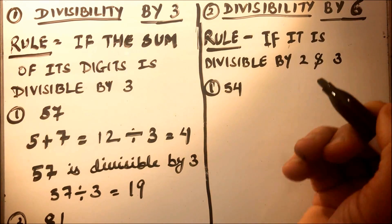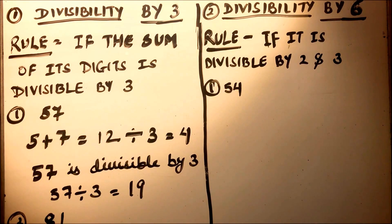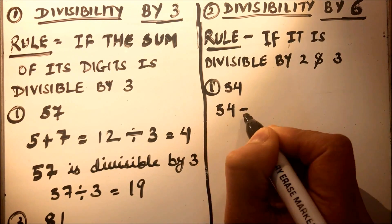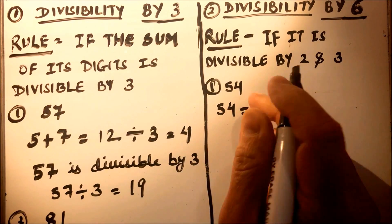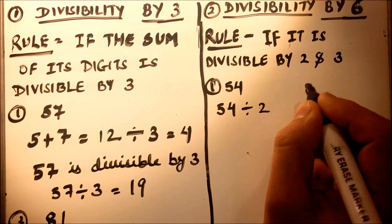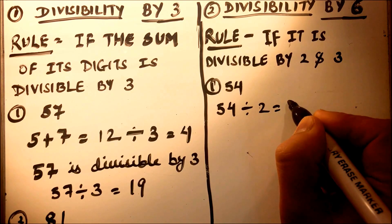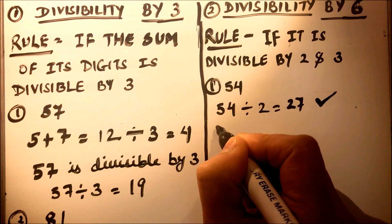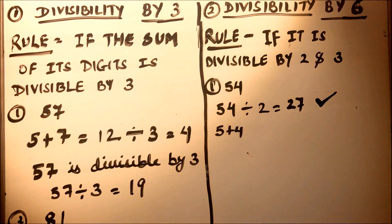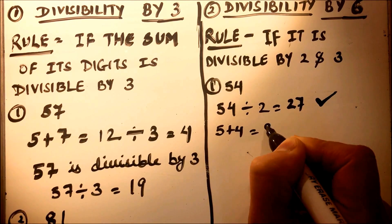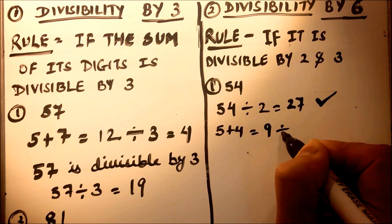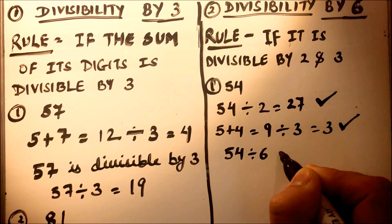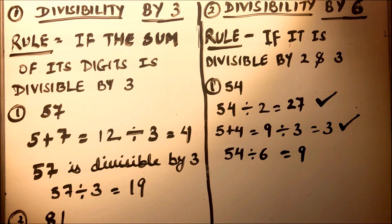For example, let's take the number 54 and check whether it is divisible by 6 or not. First, we check if it is divisible by 2 — it is an even number, so 54 divided by 2 equals 27, confirming it is divisible by 2. Next, we check divisibility by 3: the sum of the digits is 9, and 9 divided by 3 is divisible. So 54 is divisible by 6, since 6 times 9 is 54.